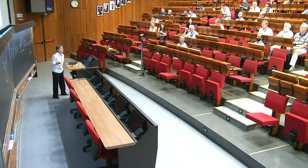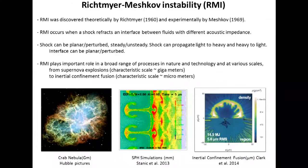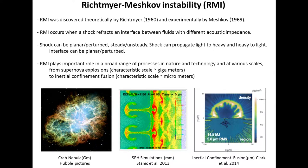Richtmeyer-Meshkov instability was discovered theoretically by Richtmeyer and experimentally by Evgeny Meshkov. It occurs whenever a shock wave refracts an interface between fluids with different acoustic impedance values. The shock can be planar or perturbed, steady or unsteady, and may propagate from light to heavy fluid or vice versa. The interface can also be planar or perturbed — RMI may develop when the shock is perturbed and interface is planar, or when the shock is planar and the interface is perturbed.